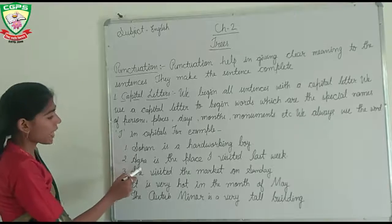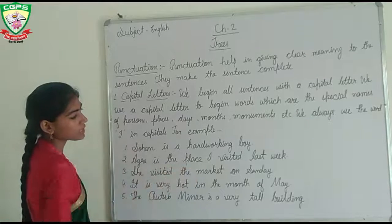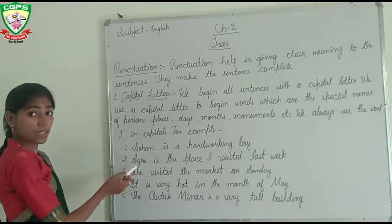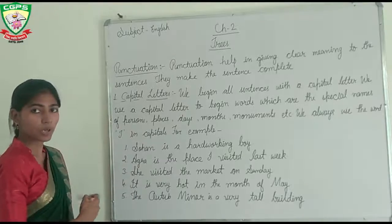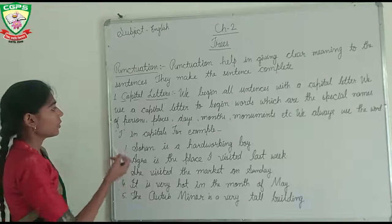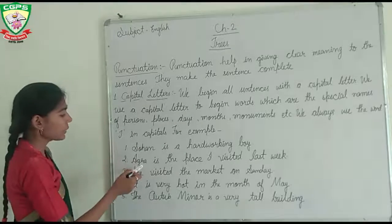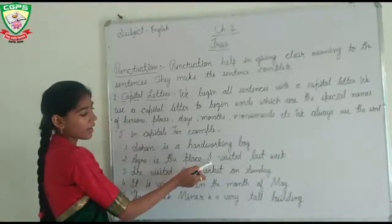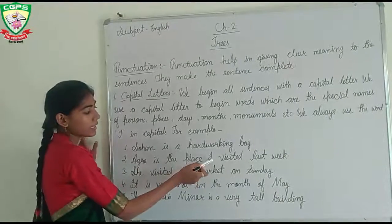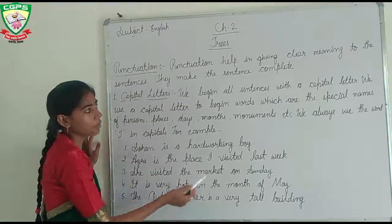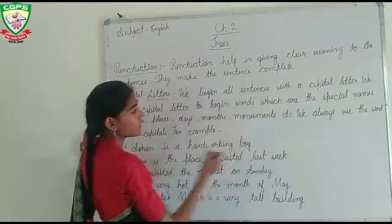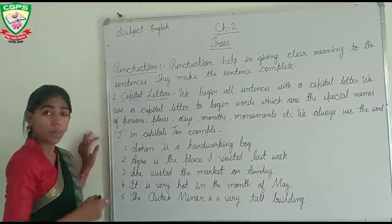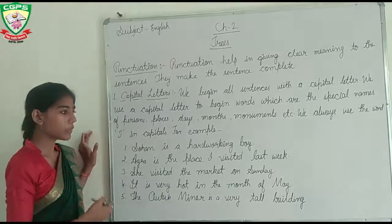Second example: 'Agra is the place I visited last week.' Agra is also a proper noun because it is a special place name. So Agra is written with a capital letter. And 'I' here is also written in capital, because we always use the word I in capital.